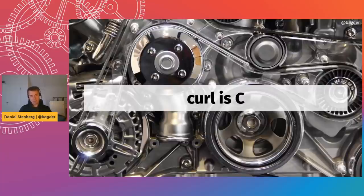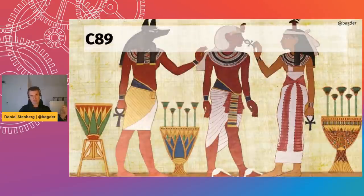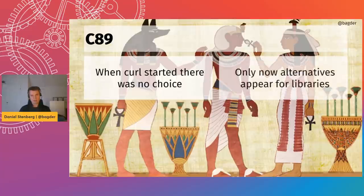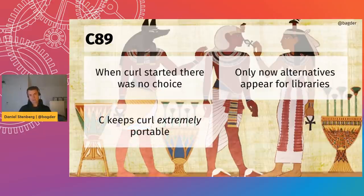Curl, the command line tool and the library, is written in C and has been since almost the beginning. The first project curl comes from started in late 1996, and back then there really was no other alternative, especially for doing very portable stuff. C kept curl extremely portable — we're counting 86 different operating systems and 22 different CPU architectures that curl has run on.